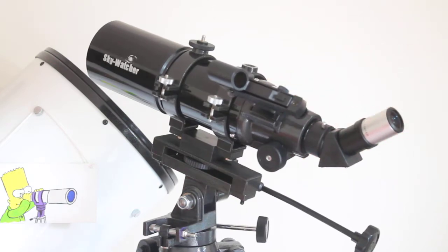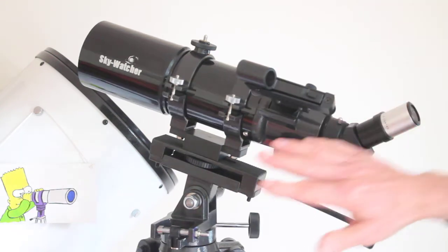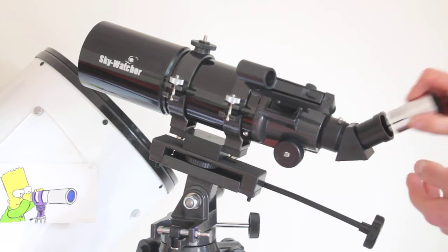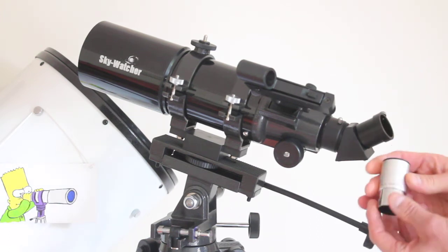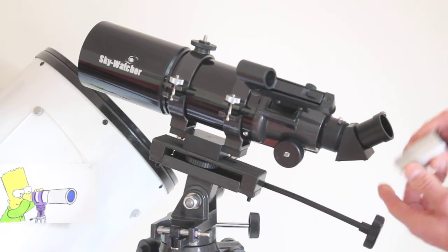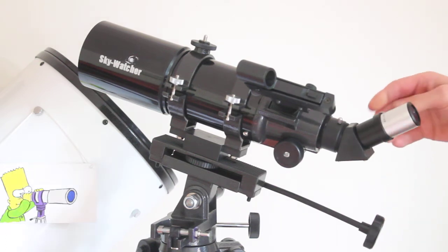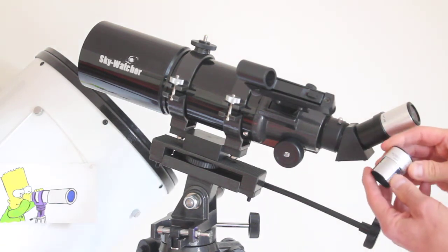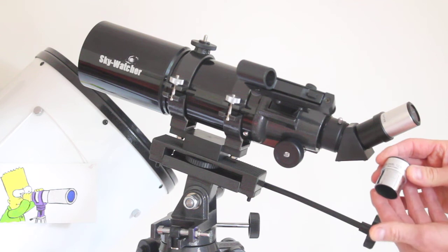This one comes with a couple of Plossl eyepieces. But if you buy the OTA on its own, you get a couple of modified achromatics, which is a posh way of saying budget eyepieces. The eyepieces you get with the AZ-3 mount are a very nice fully coated 26 millimeter Plossl with good eye relief, giving a wide field of view at just 16x magnification, and a 12.5 millimeter multi-coated eyepiece for extra magnification.